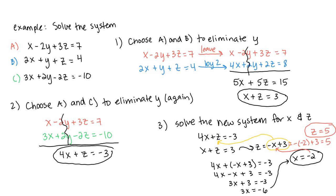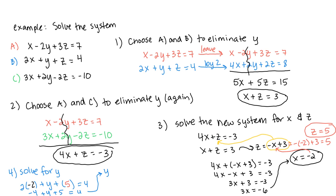Now the last step is to return to one of the original equations to find y. Using equation B with x equals negative 2 and z equals 5: substituting in, we get negative 4 plus y plus 5 equals 4, which means y plus 1 equals 4, therefore y equals 3. So our solution is the ordered triple (negative 2, 3, 5).